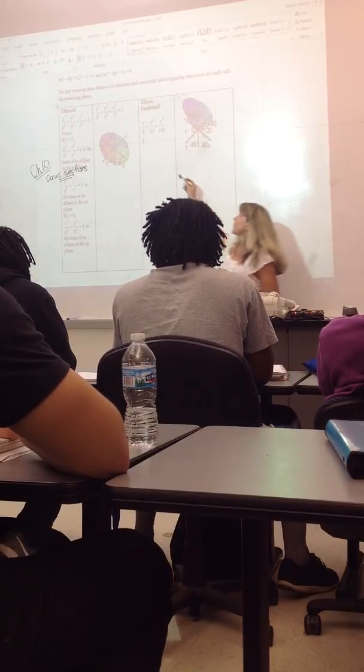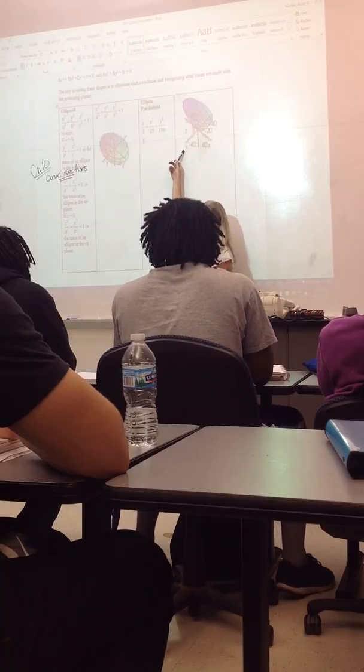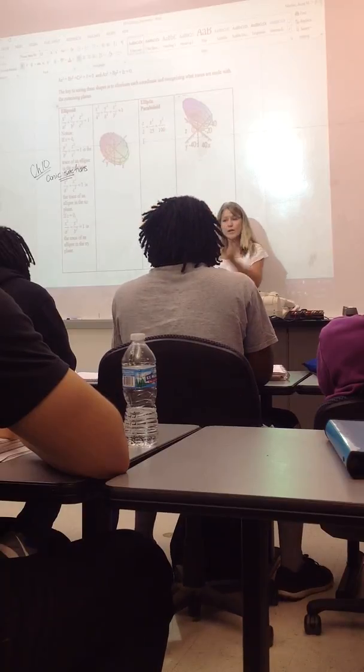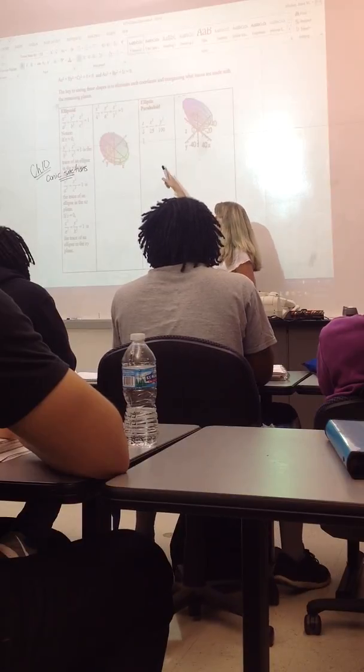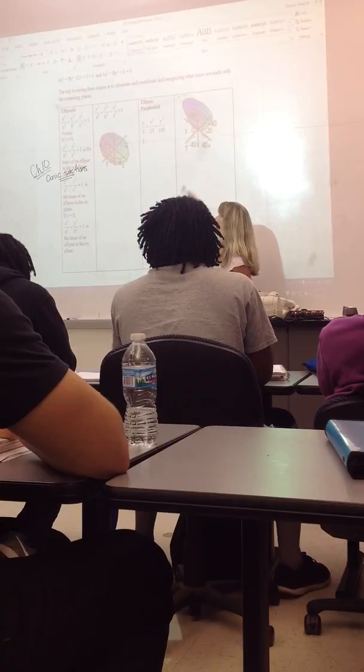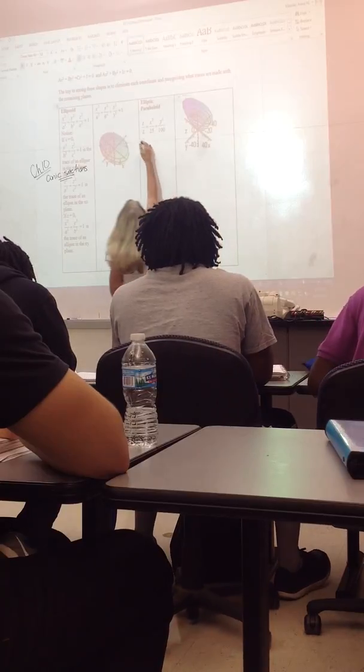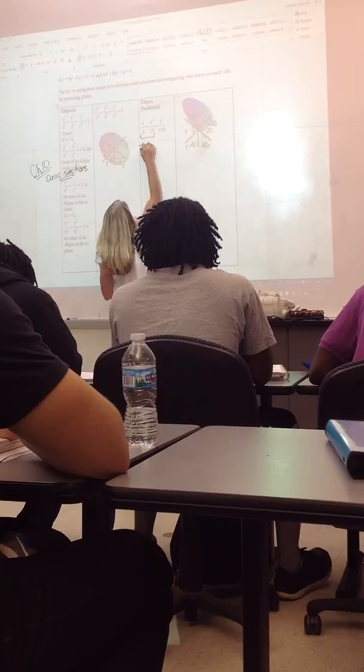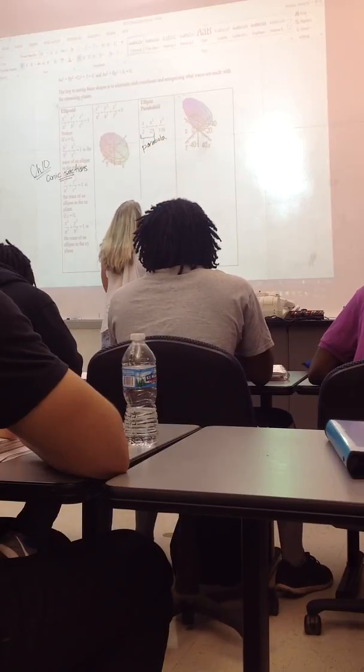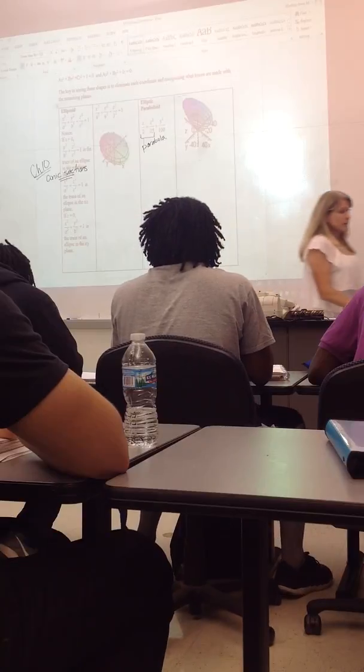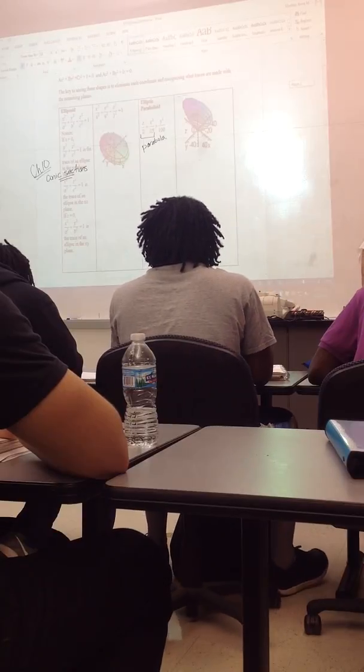So one of the variables not being squared means you get parabolas. That's a clue that you're going to get a paraboloid, not one of the other shapes. Whereas all the other ones, all three variables are squared.